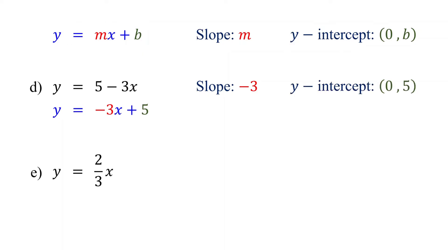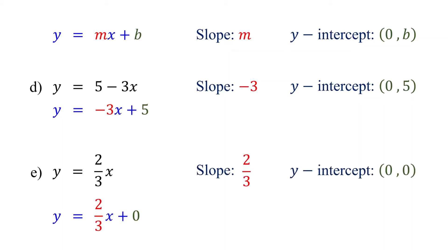What if there is no constant term? What does that mean for the y-intercept? No constant term means b equals 0. So the slope is 2/3, and the y-intercept is (0, 0).